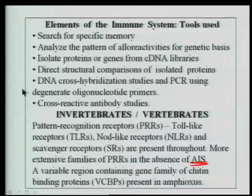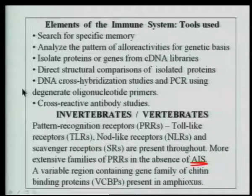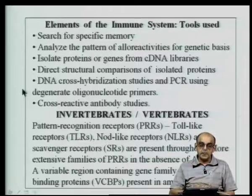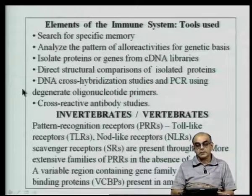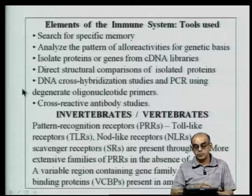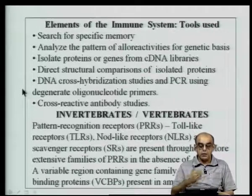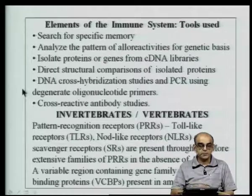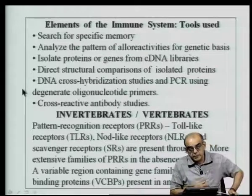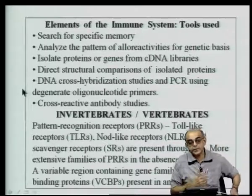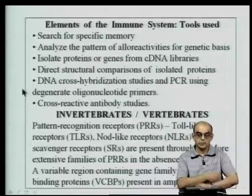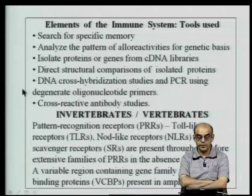A familiar example is the Toll-like receptors. The Toll molecule was first discovered in Drosophila while studying embryogenesis. Later, it was found that this molecule has similar or homologous molecules called Toll-like receptors present in higher organisms. There are various kinds of TLRs from 1 to 10, which play a very important role in innate immunity towards different kinds of pathogenic protein molecules.